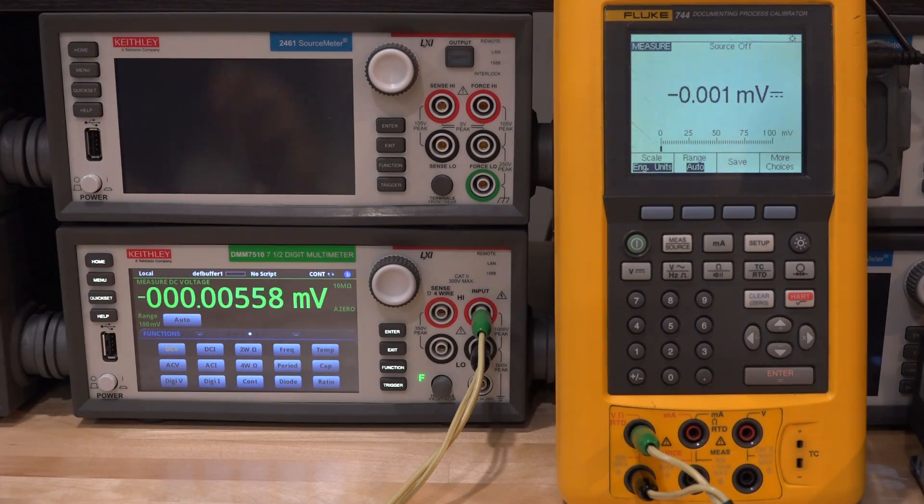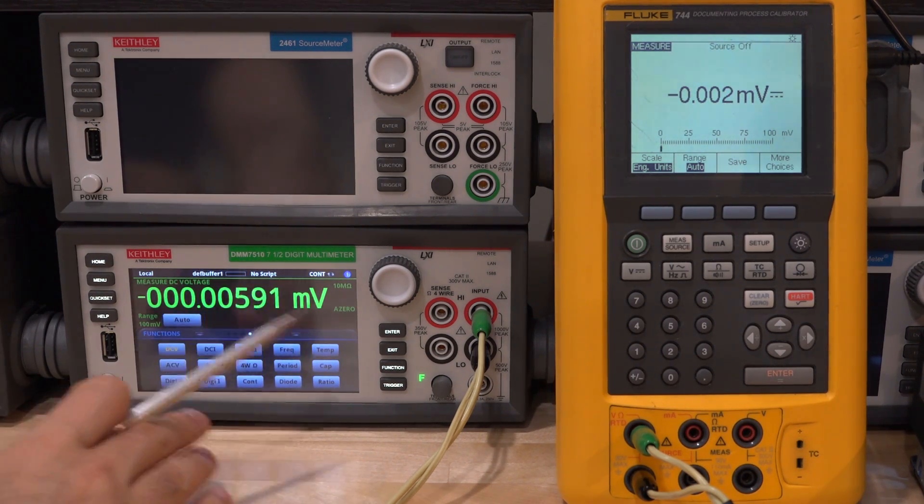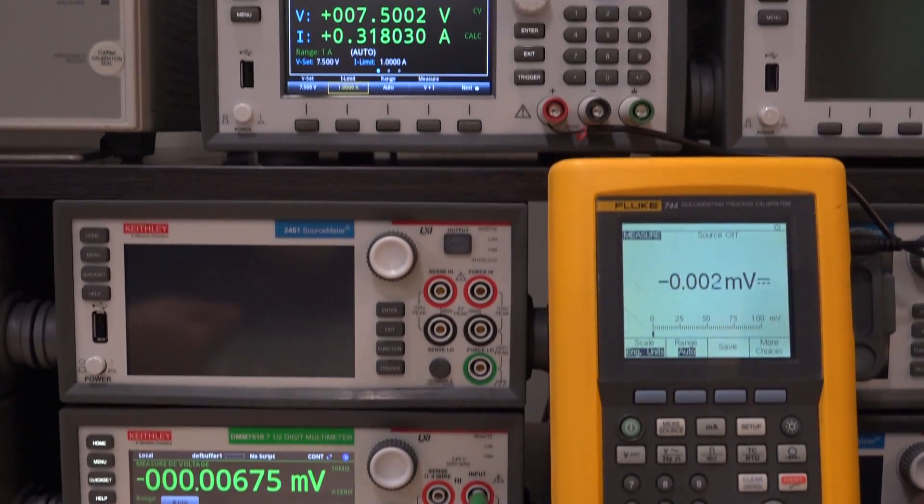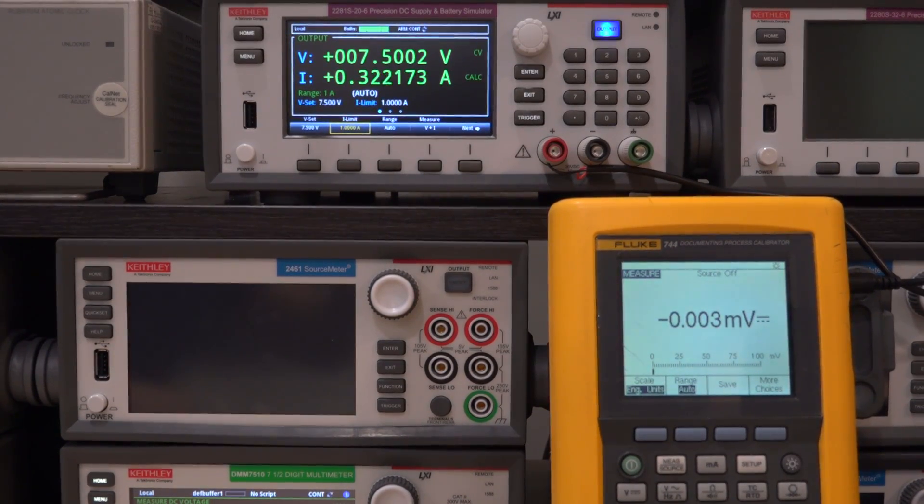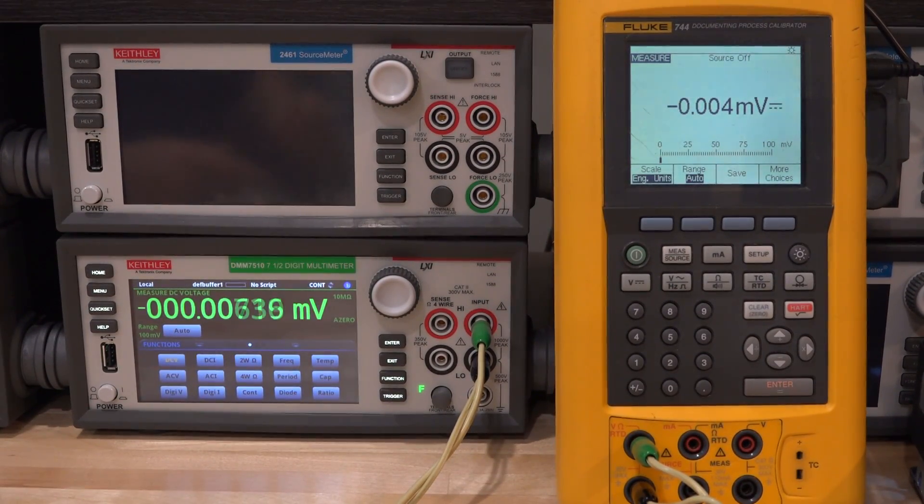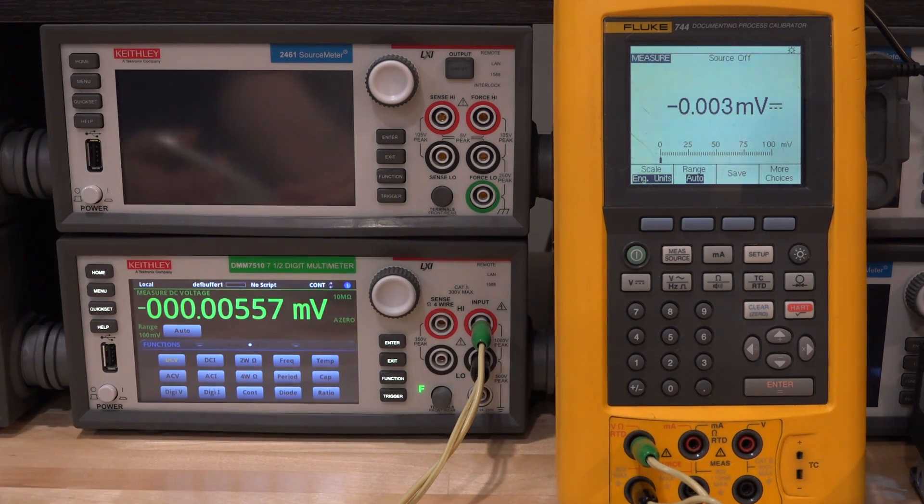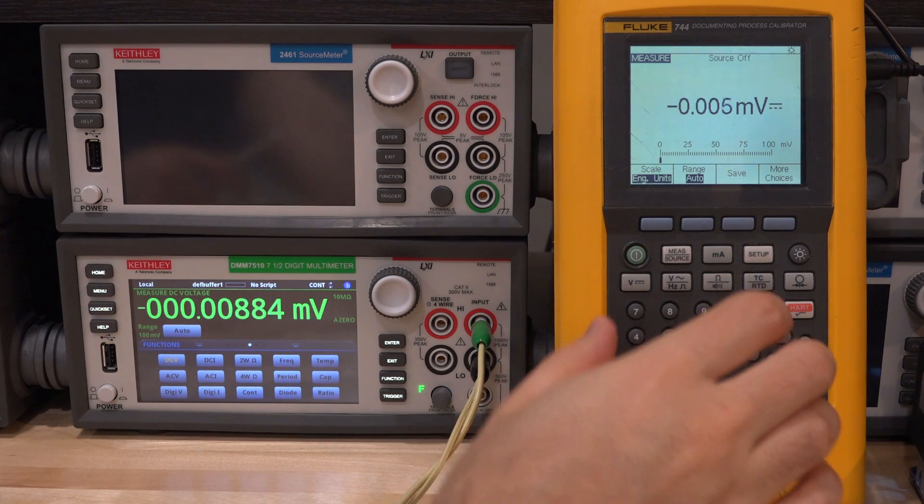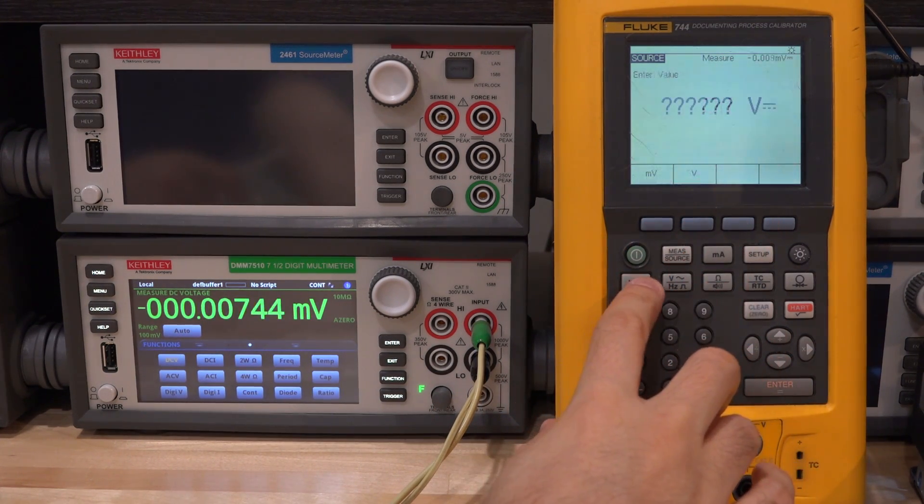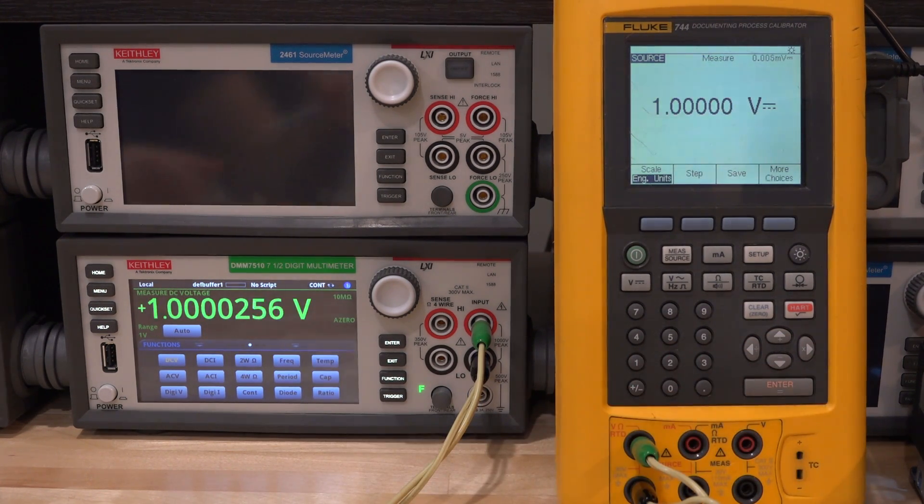I'm going to measure it against the Keithley DMM 7510 which I've also done a full teardown and review. Definitely one of my favorite meters here in the lab. This thing can both measure and source, so let's try sourcing some voltages, currents, and so on into the Keithley and see how it performs. I'm going to change this from measure to source. I'm going to choose the voltage. It's asking for what voltage, let's do one volt, and enter. And check it out.